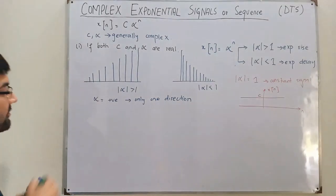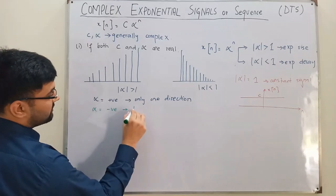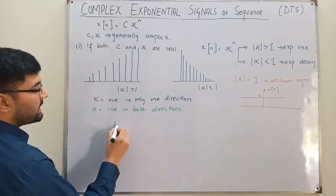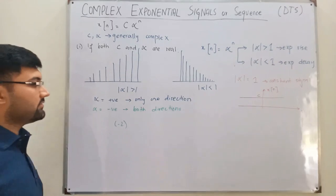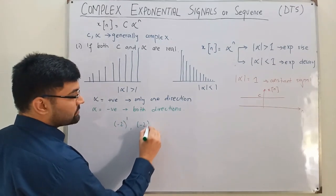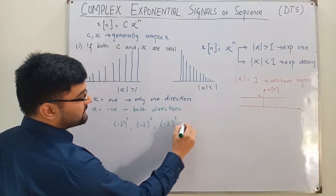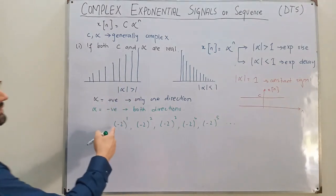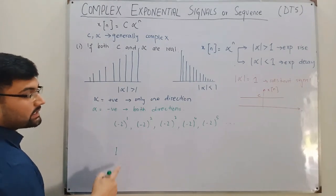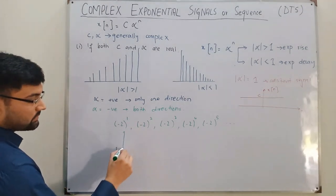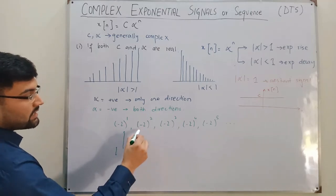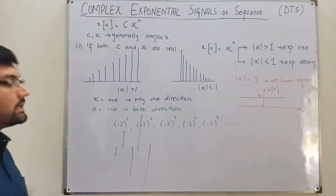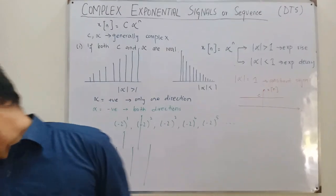If alpha is negative, the signal alternates in both directions. For example, with alpha equal to negative 2: negative 2 to the power 1 is negative 2, to the power 2 is positive 4, to the power 3 is negative 8, to the power 4 is positive 16, and so on. So you get values alternating in sign — both positive and negative.